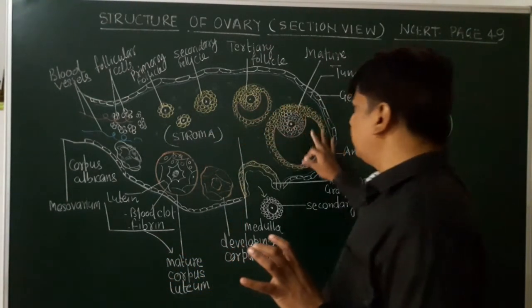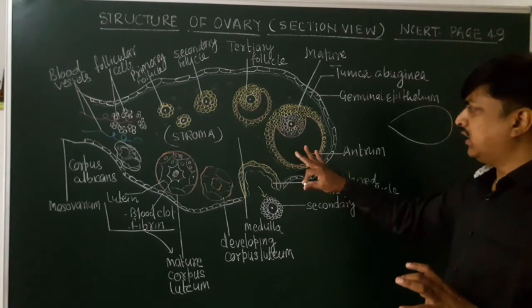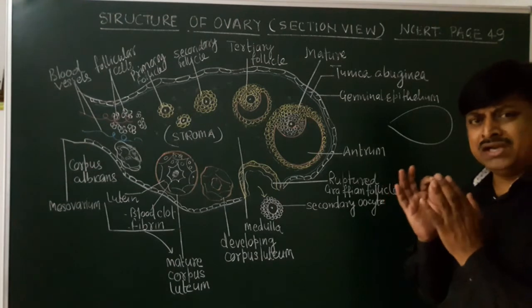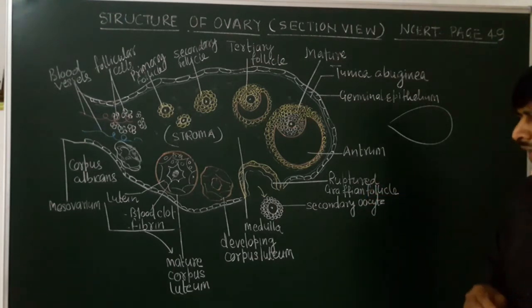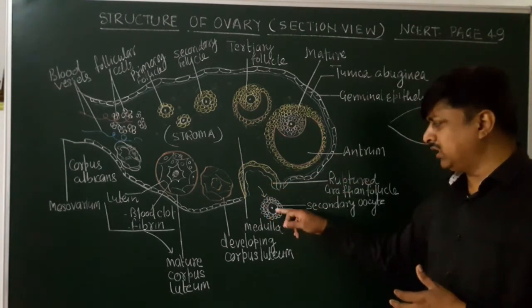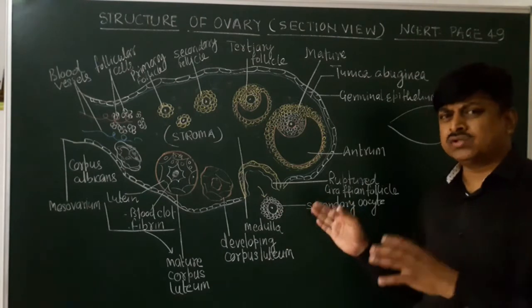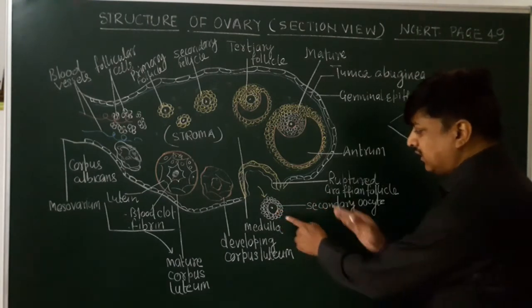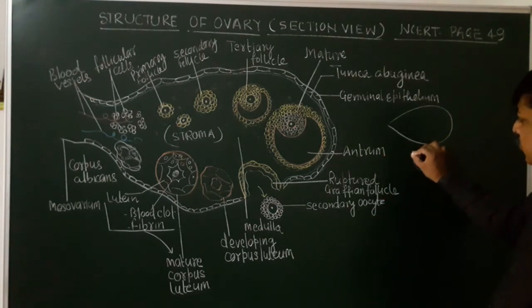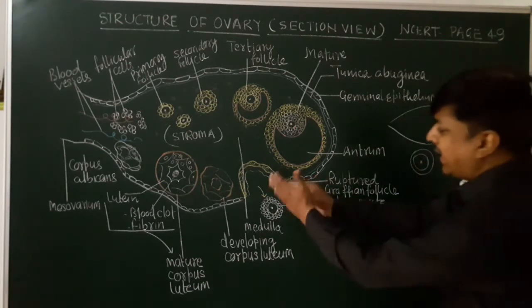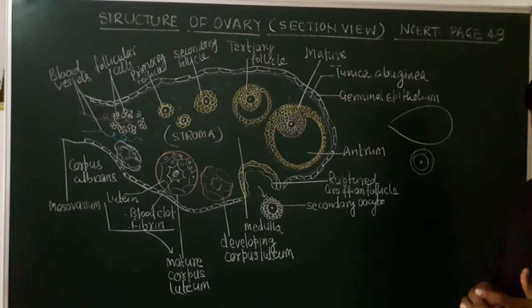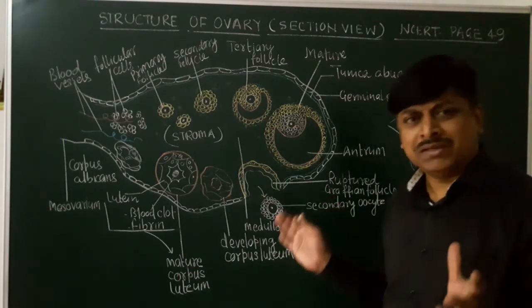Here you can see the mature Graafian follicle. At the time of the menstrual cycle, during the mid-cycle — that is the 13th or 14th day of the cycle — ovulation takes place and the ovum comes out. This is not the mature ovum; this is the ovum you can see here, and around it there are a few granulosa cells. This coming out is called ovulation, which takes place on the 14th day of the menstrual cycle.